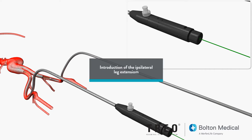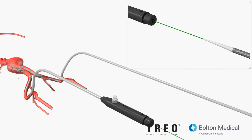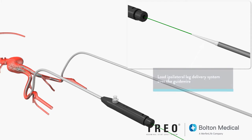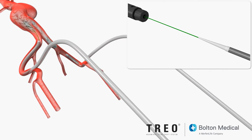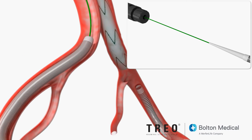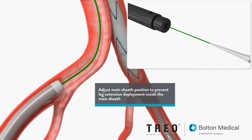While holding the sheath hub assembly with one hand, advance the ipsilateral leg delivery system over the wire until the tip of the delivery system touches the main sheath hub assembly. Adjust the main sheath position to prevent leg extension deployment inside the main sheath.